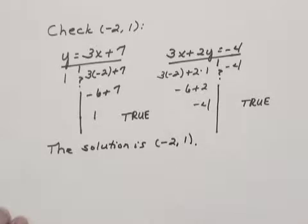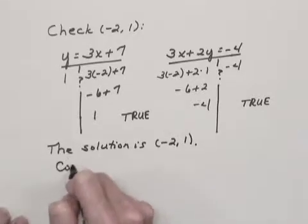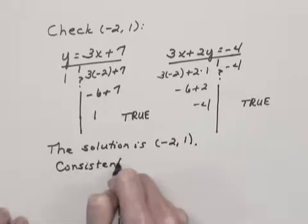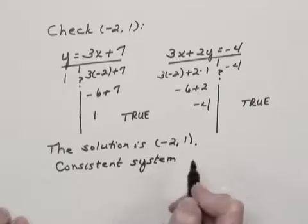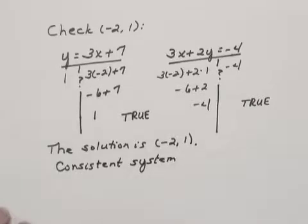Now, because this system of equations has a solution, it is consistent. And since there's exactly one solution, since the equations are not the same, we have independent equations.